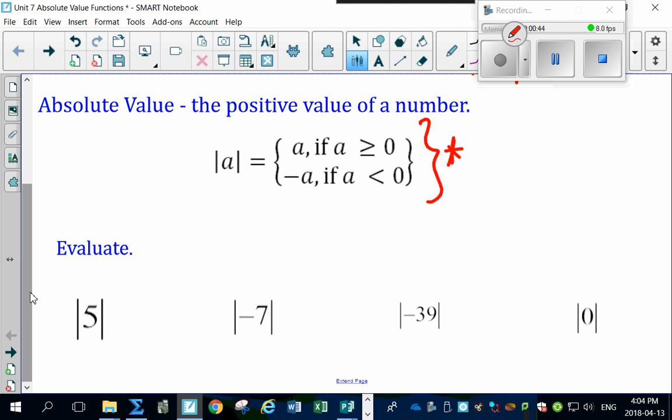Absolute Value means what is the actual value of the number in the brackets. In this case, look, what's the Absolute Value of 5? Well, that's easy. That's 5.